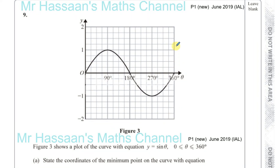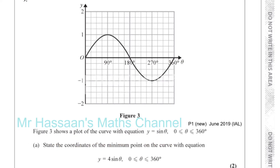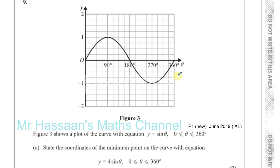Now for question number 9 from the P1, June 2019, International A-Level paper. Here we have a question about trig graphs. Figure 3 shows a plot of the curve with equation y equals sine theta, with theta between 0 and 360 degrees shown. State the coordinates of the minimum point on the curve with equation y equals 4 sine theta.